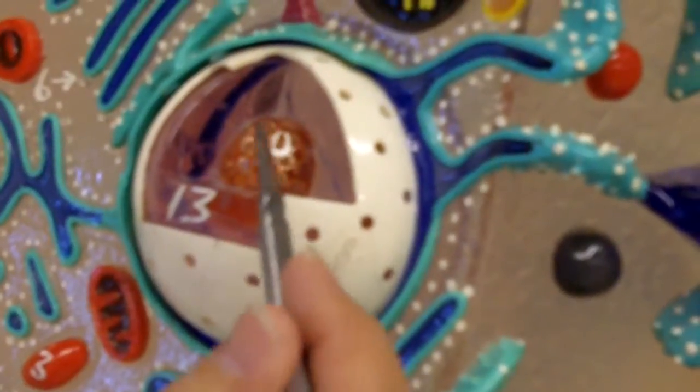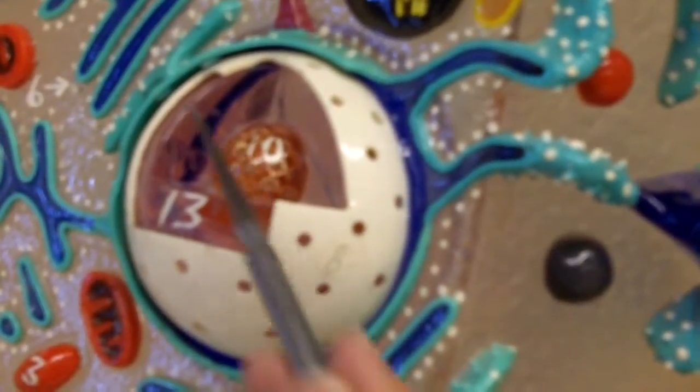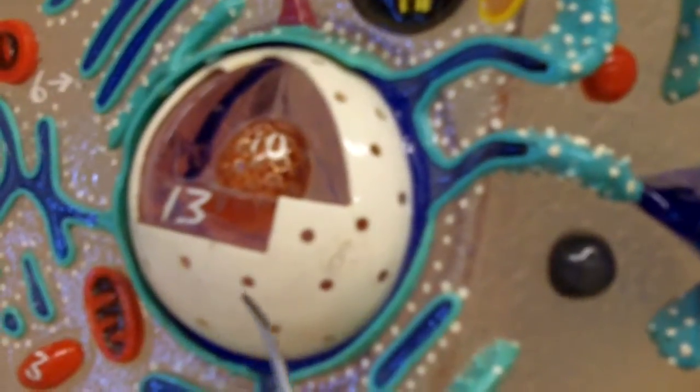Also in here, we see the nucleolus, which is where we make the subunits for ribosomes. Those subunits will leave the nucleus and go out to the cytoplasm where they're involved in protein synthesis.